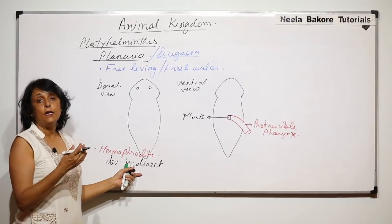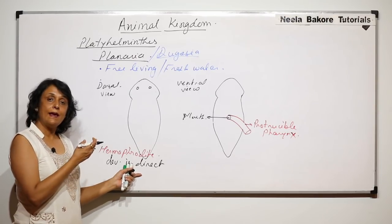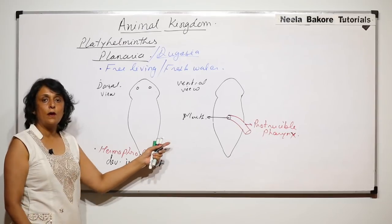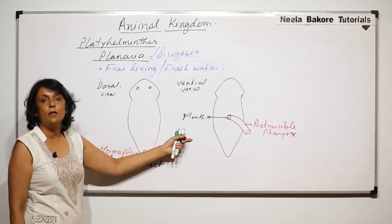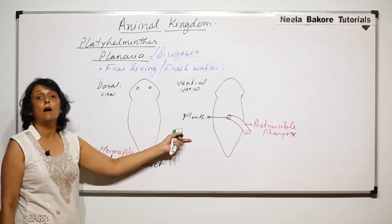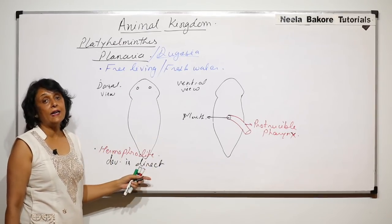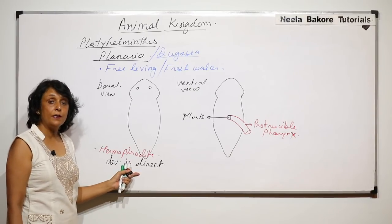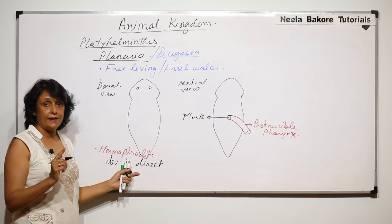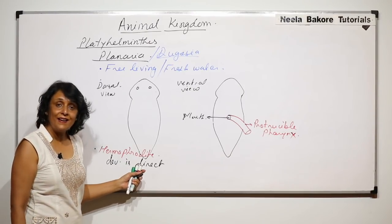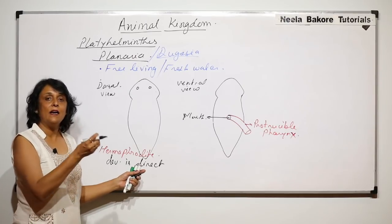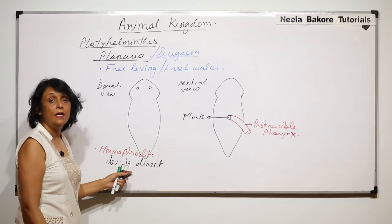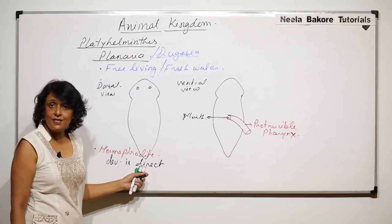In the case of other platyhelminths like tapeworm and Fasciola, which we will be talking about in a few minutes, there are larval stages, meaning their development is indirect. But in Planaria it is direct — a young planarian comes out with no larval stages.